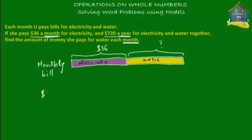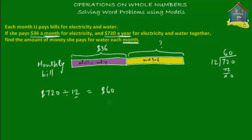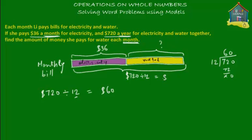We also have $720 a year for electricity and water combined. For one month, how much does she pay for electricity and water combined? Well, if she pays $720 a year, then she pays $720 divided by 12 each month, because a year has 12 months. $720 divided by 12 equals $60. So she pays $60 a month for electricity and water together.